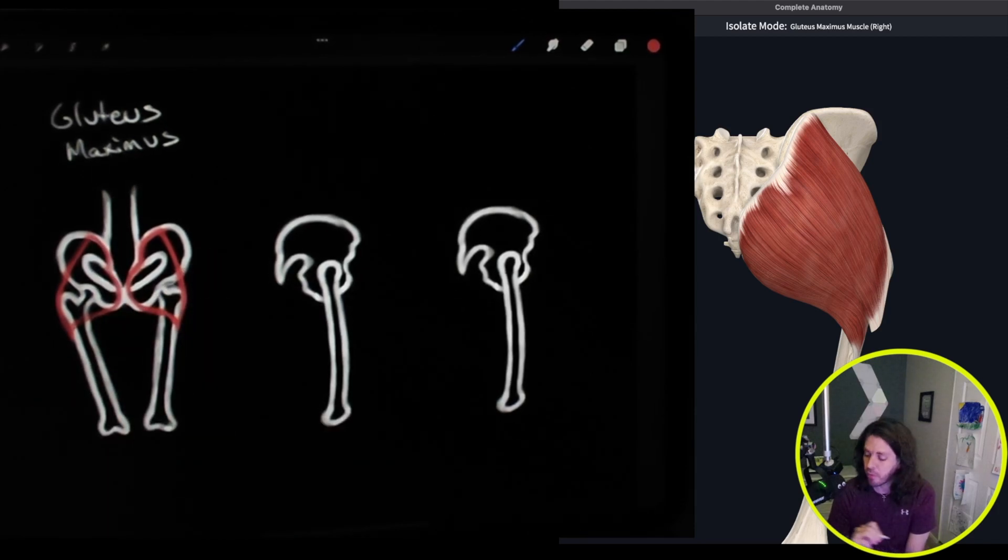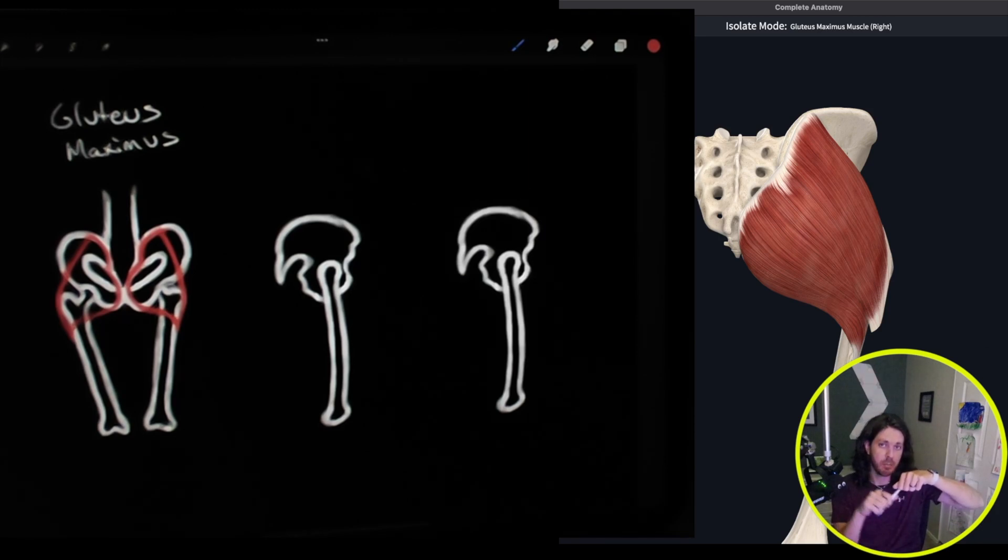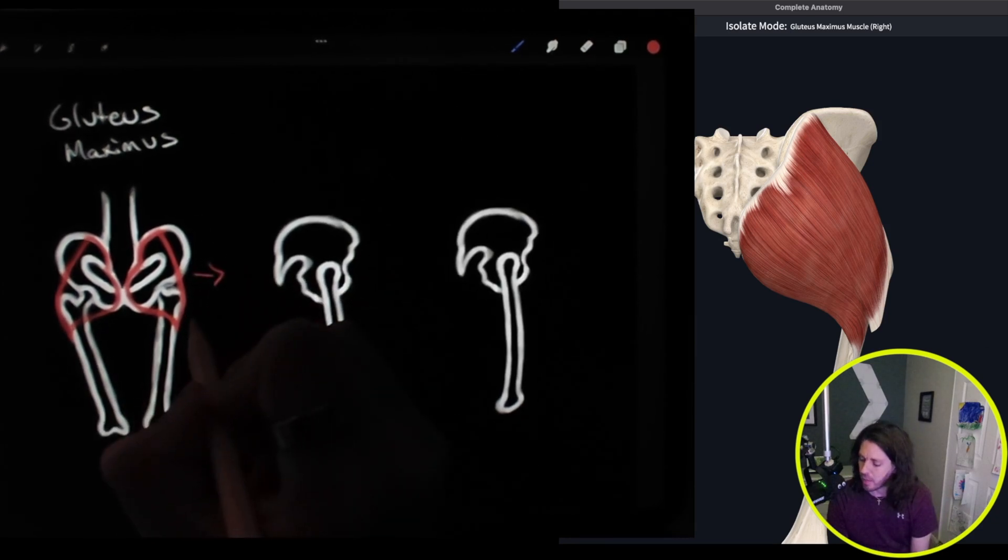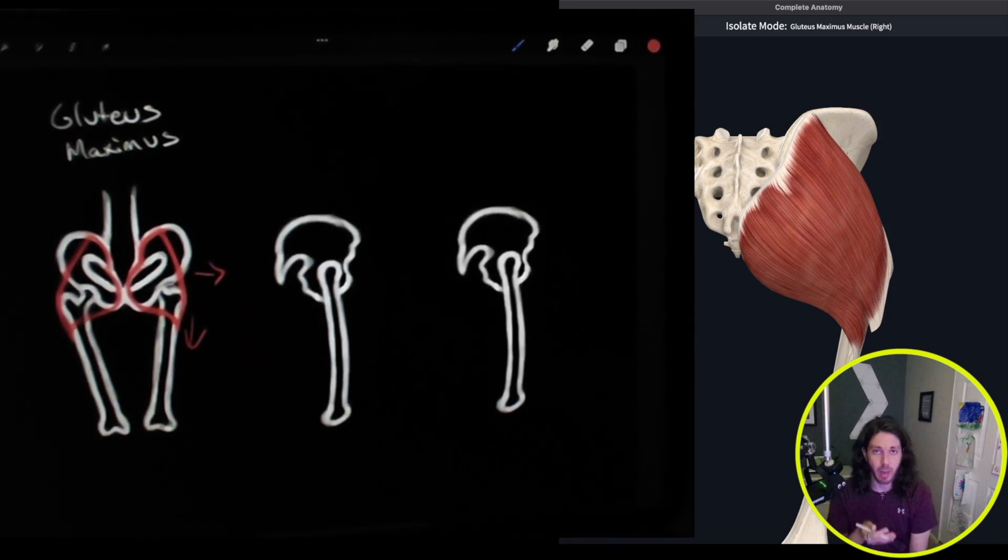Now let's talk about the movement. The gluteus maximus is in charge of extension, so that's moving the leg back. And it's also abduction, that's moving the leg out. So it would be out and moving the femur back. So when you're walking or say you're doing jumping jacks, and it also is really useful as part of our core muscles to help us get up, sit up and down.